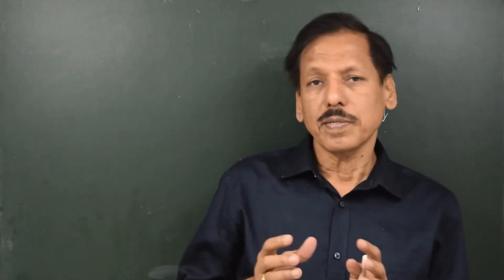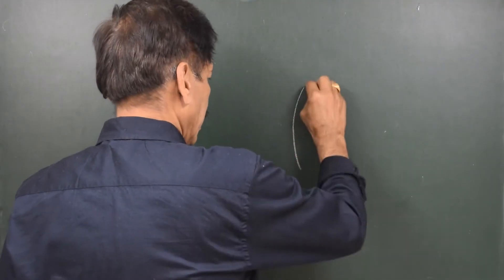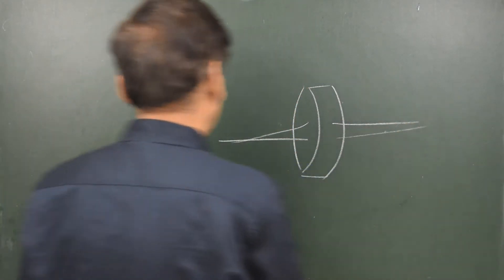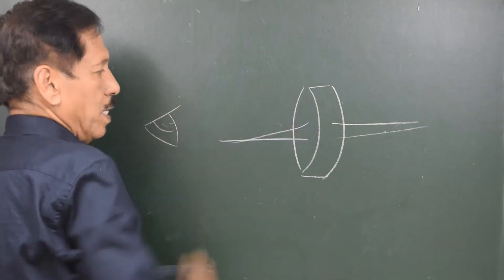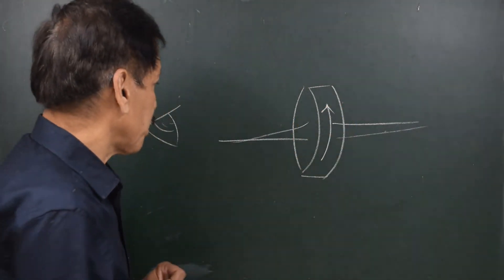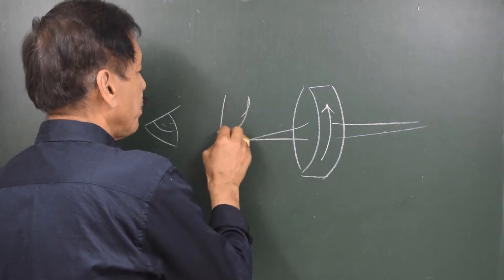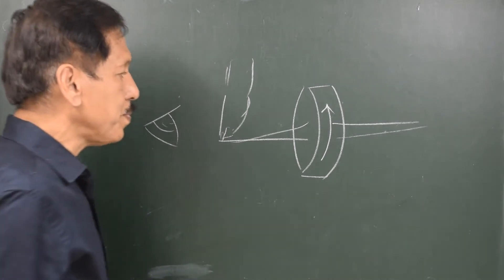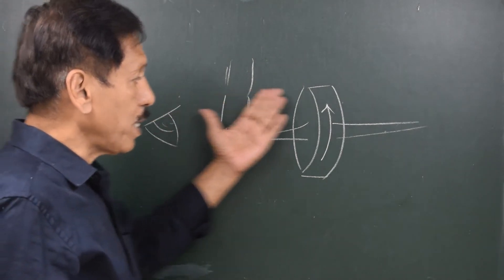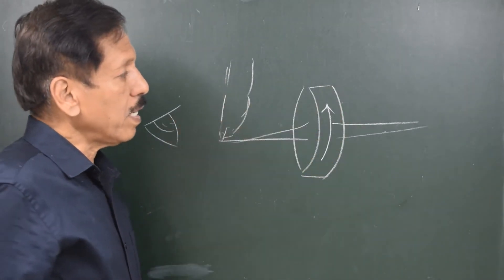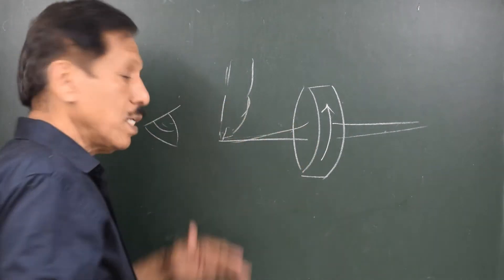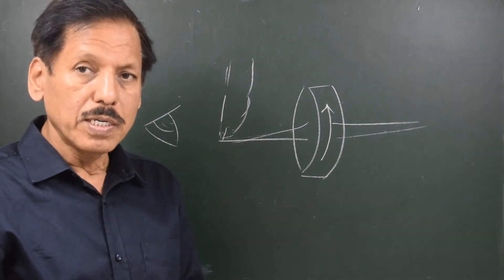Let us try to understand precession diagrammatically with a simple diagram. Here is a disc of a rotor. These are the axles. Let us say I am viewing from this side — I am looking at this face and as I look at this face I find the rotor turning anti-clockwise. Now I try to apply some force here. If I am applying a force vertically, it means a torque is being applied to the axle. The torque is applied in the plane of the board — we say this blackboard is the plane of torque. Now this axle, instead of moving downwards, will move in a plane perpendicular to the plane of torque.